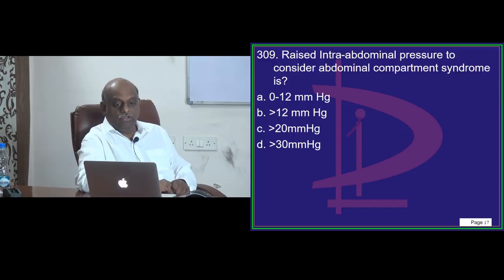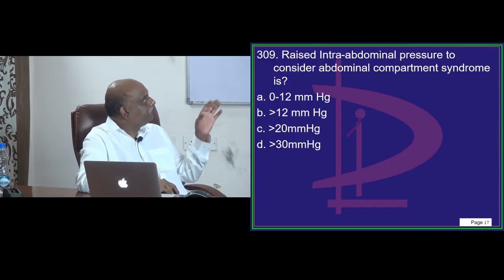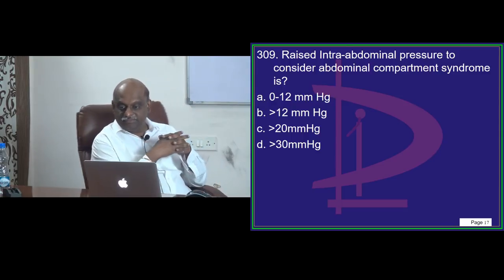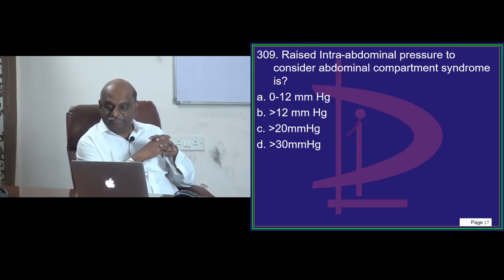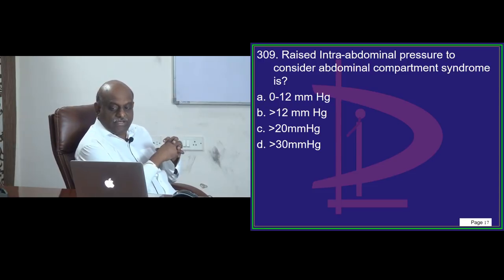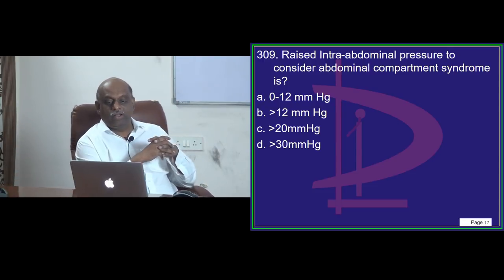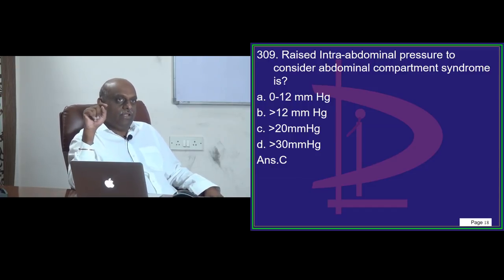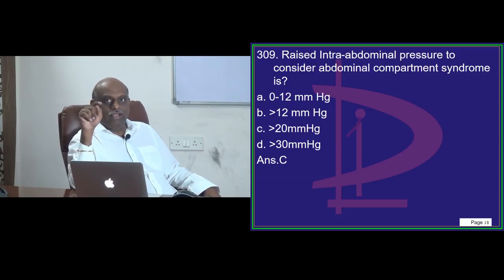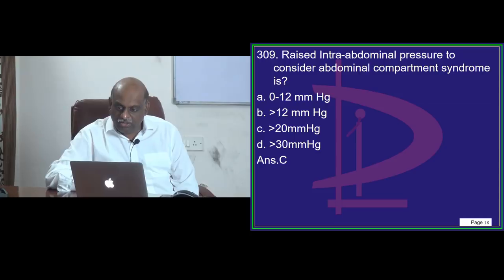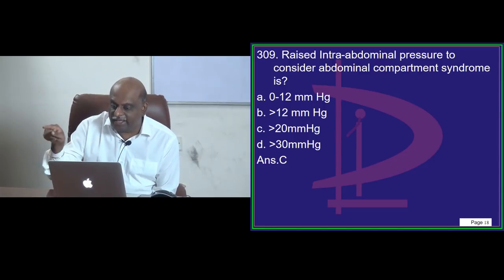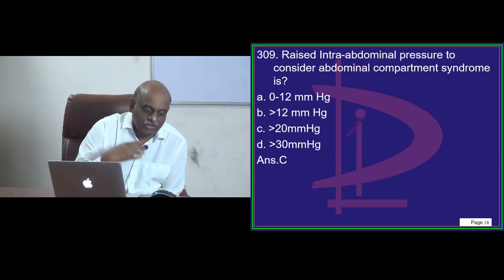Raised intra-abdominal pressure — more than how much do you call it abdominal compartment syndrome? Question 309. Ravi is betting on more than 30, Roger thinks more than 12. This is one question — if you know it, you know it; if you don't, you are clean bowled. I can see most of you proposing more than 20. Please don't forget: if you got this question wrong, bookmark it and set a reminder in the Umedico app notes, which will keep sending you reminders.